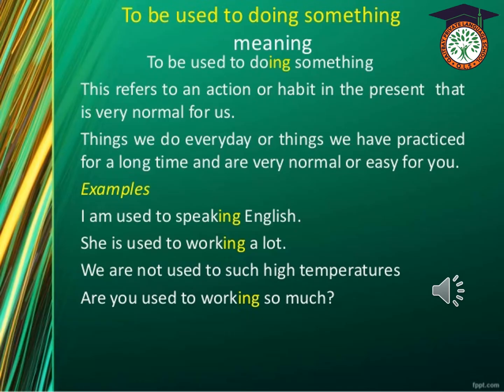To be used to doing something means that an action or habit in the present is very normal for us — things we do every day, or things we have practiced for a long time and that are very normal or easy for us. Examples: I'm used to speaking English — speaking English is easy for me. She's used to working a lot — working a lot is easy for her. We are not used to such high temperatures — it's not normal for me to live in high temperatures. Are you used to working so much — is working so much normal for you?